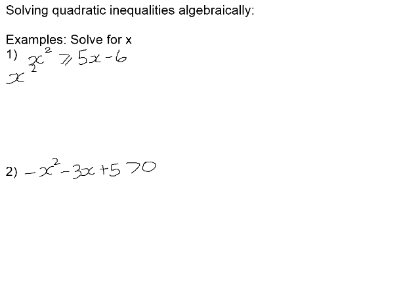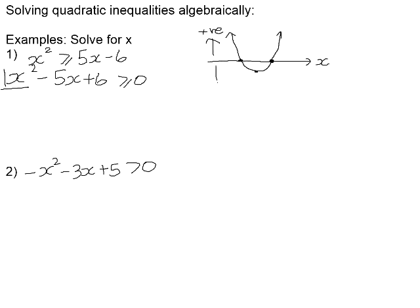So our first job with number one is to subtract 5x from both sides and add 6 to both sides. If we remember from our grade 10 knowledge of parabolas, when we have our squared term in a quadratic and the coefficient is positive like it is here, that means our parabola will have a minimum turning point — it will be a smiling parabola. To see where we are looking for positive and negative values — positive above the x-axis and negative below the x-axis — we need to find our critical values.